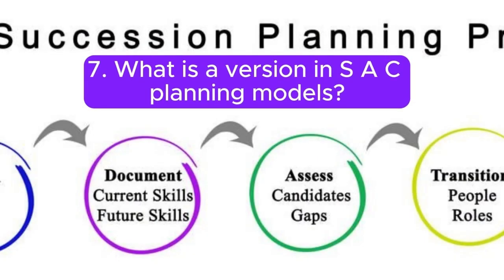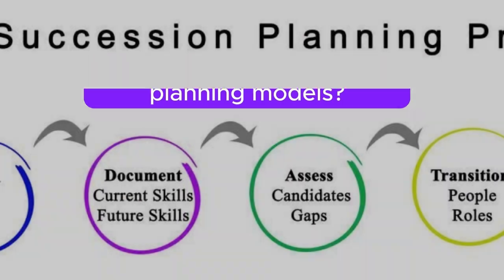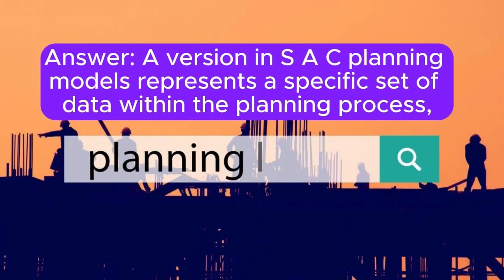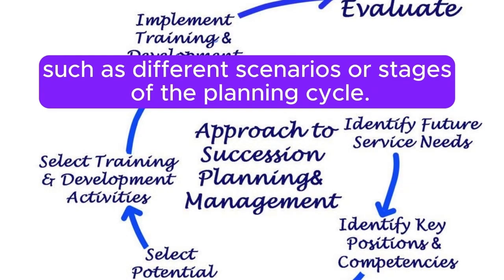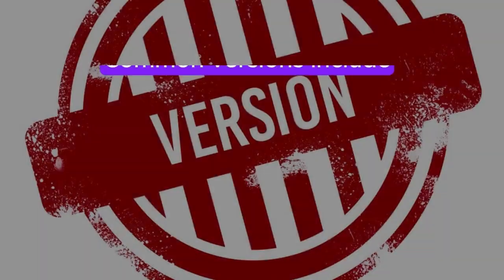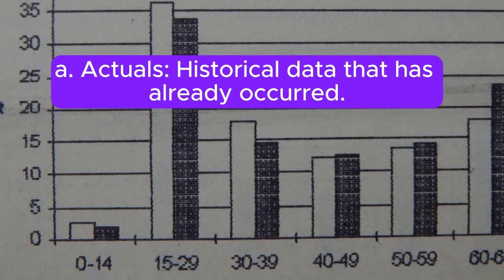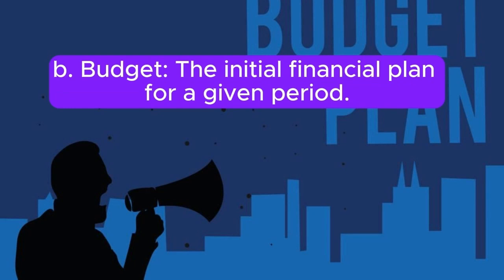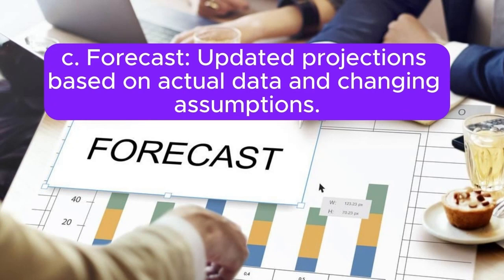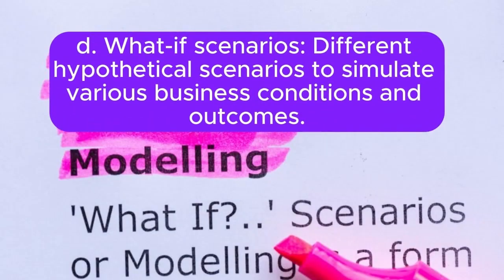Question 7: What is a version in SAC Planning Models? Answer: A version in SAC Planning Models represents a specific set of data within the planning process, such as different scenarios or stages of the planning cycle. Common versions include: A. Actuals — historical data that has already occurred. B. Budget — the initial financial plan for a given period. C. Forecast — updated projections based on actual data and changing assumptions. D. What-if scenarios — different hypothetical scenarios to simulate various business conditions and outcomes.